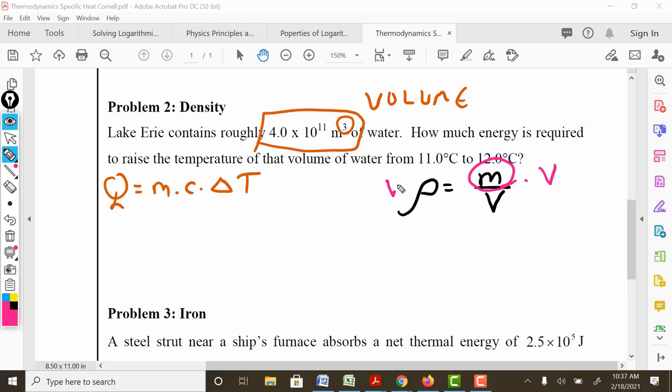So if I solve for m, if I multiply both sides by v, I get that the mass is the volume times the density. This is the Greek letter rho, by the way. Could you say that again, please? And it represents density. Now, so the mass, our water mass is going to be the volume, which is 4.0 times 10 to the 11 meters cubed. The density of water is 1,000 kilograms per meter cubed.